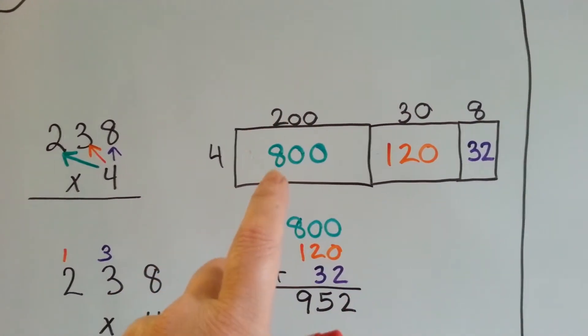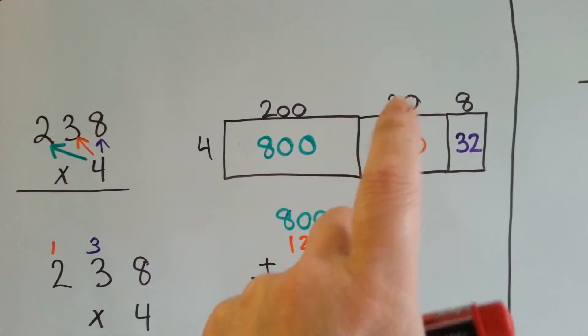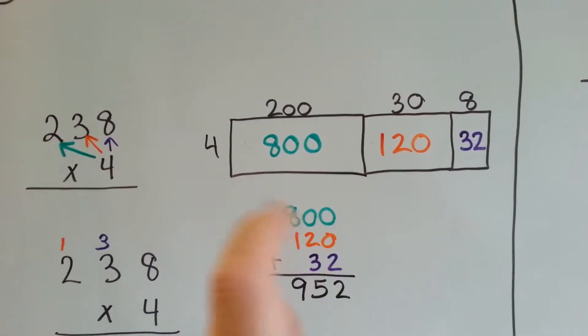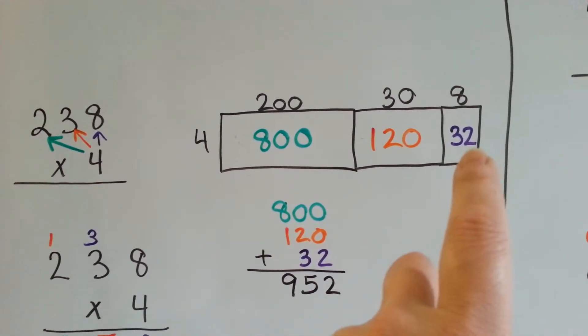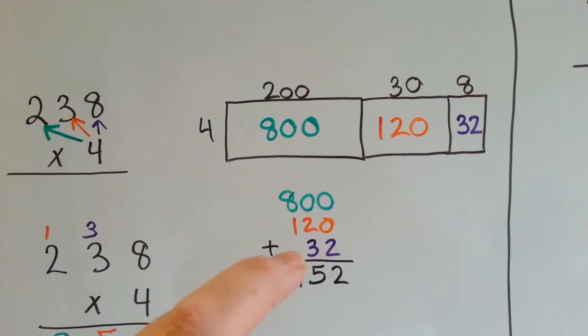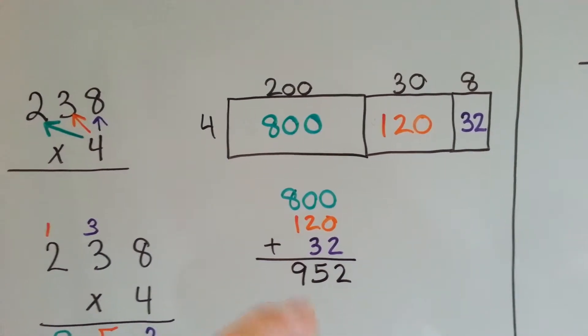4 times 200 is 800. 4 times 30 is 120. See, it's 4 times 3 and add the 0. 4 times 8 is 32. And then we can add the 800, the 120, and the 32, and we get 952.